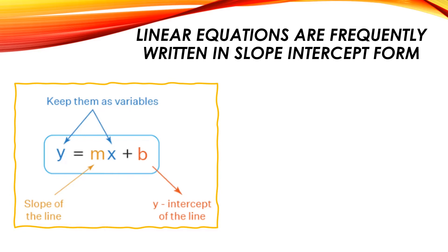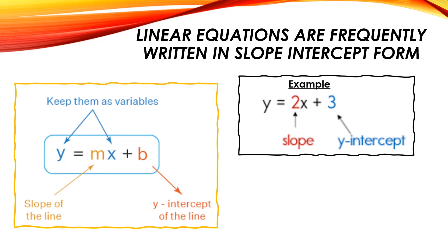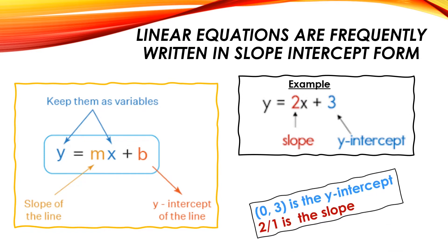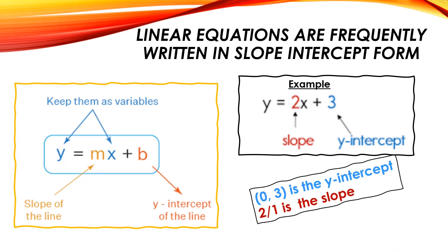You're simply going to replace m with the slope and b with the y-intercept. As an example, we have the equation y equals 2x plus 3. The number in front of x is your slope, so our slope is 2 and the y-intercept is 3 — that's your constant. So 0, 3 would be our y-intercept, and our slope is actually 2 over 1, because every whole number has a 1 underneath.